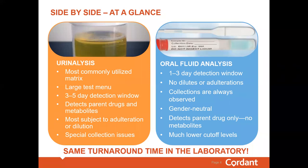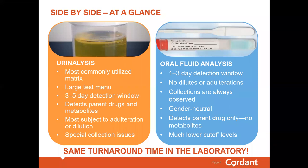Urine is an ideal matrix for drug abuse testing, but it has definite limitations. It is the matrix most prone to adulteration, substitution, and intentional dilution. The best way to combat adulteration and substitution is through observed collections, which often require specially designated facilities and same-sex collectors. Observed collections are often very uncomfortable for both the collector and the donor, and not even an observed collection can combat an intention to dilute. During times of required physical distancing, many are not comfortable with observed collections in tight quarters such as a restroom, or have moved to a telemedicine approach.